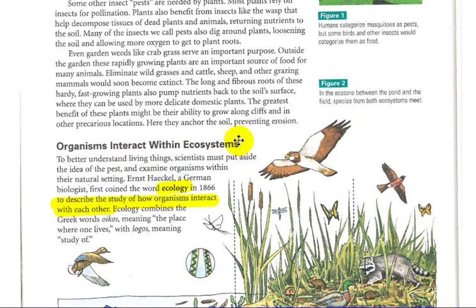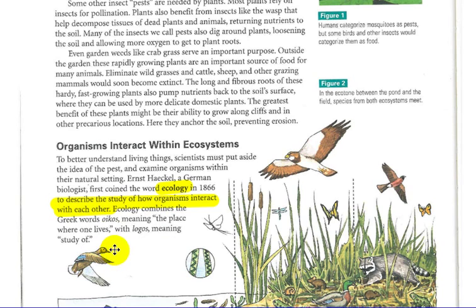Organisms interact within ecosystems. To better understand living things, scientists don't use the idea of pests — they simply look at all of the organisms within a natural setting. Ernest Haeckel, a German biologist, first coined the word ecology in 1866 to describe the study of how organisms interact with each other. Ecology combines the Greek word oikos, meaning the place where one lives, and logos, meaning the study of. So, the study of where one lives is ecology.